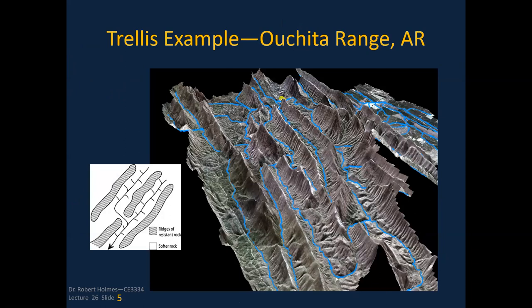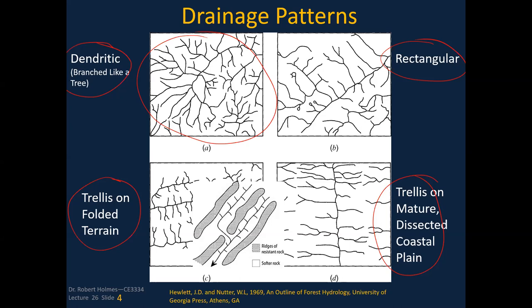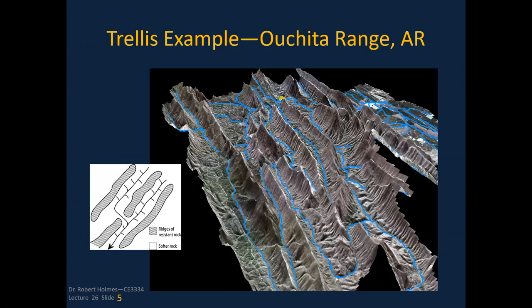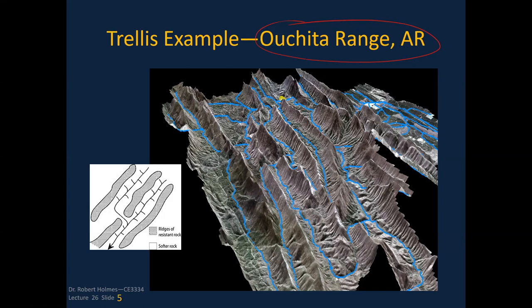This is an example of a trellis pattern versus a dendritic pattern. This is the Ouachita Range down in Arkansas, southwest of Little Rock, south of Hot Springs. You can see the drainage patterns here are more trellis than dendritic. The soils are very tight and shallow, and you can see how the formation of the watershed is more of a trellis than a dendritic type of shape.